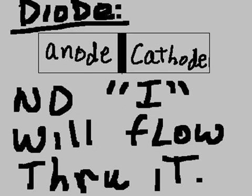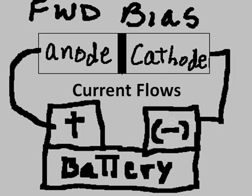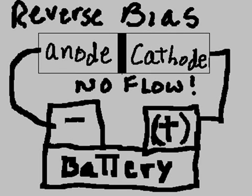Reverse bias the diode and no current will flow. Here's forward bias: negative goes to the cathode, positive goes to the anode, and current flows. Here's reverse bias: positive goes to the cathode, negative goes to the anode — no current flow.